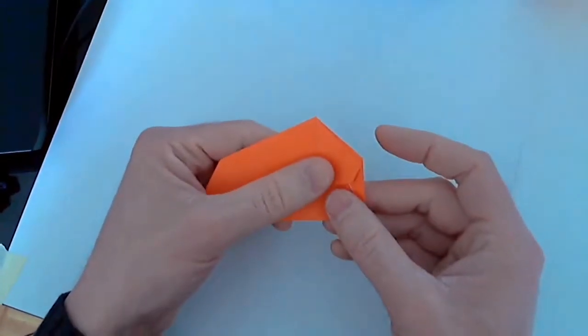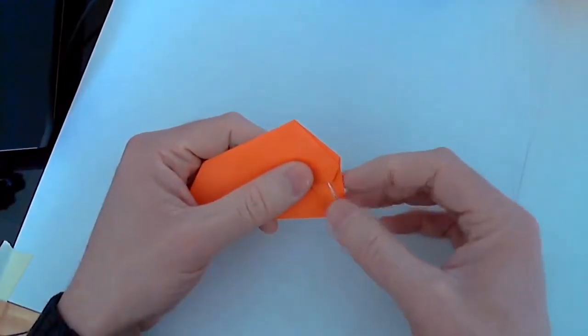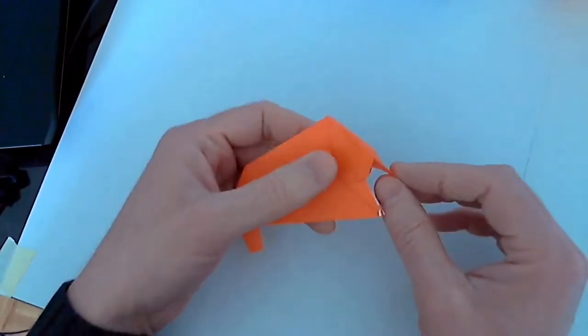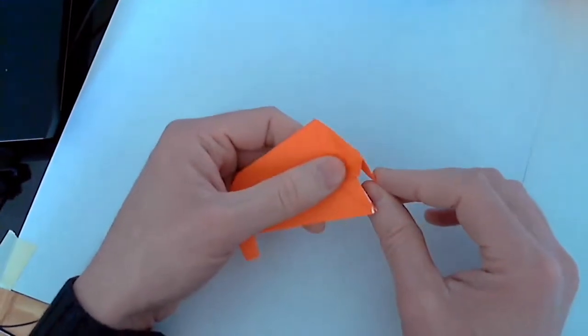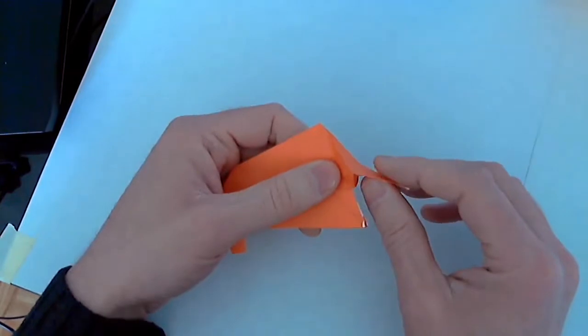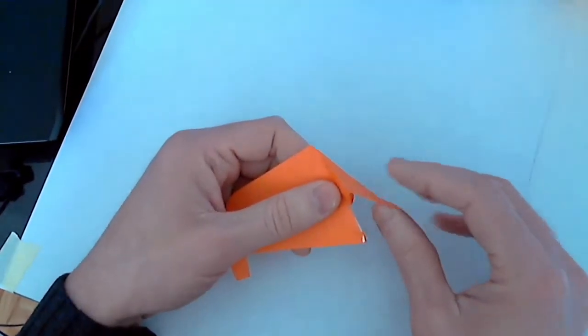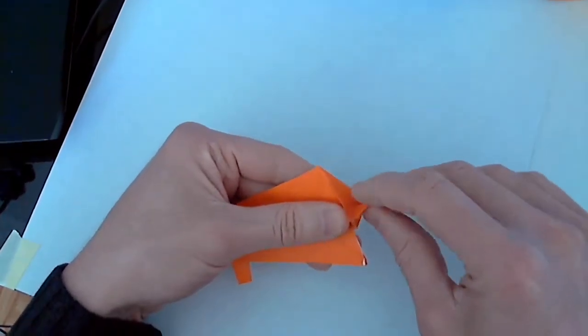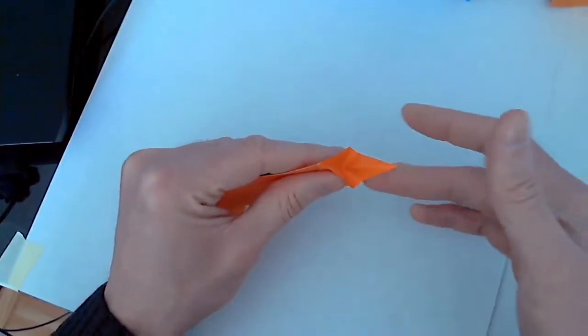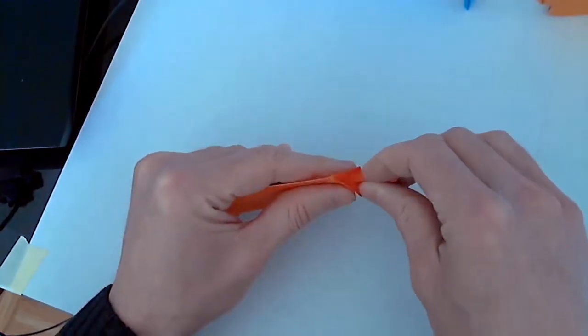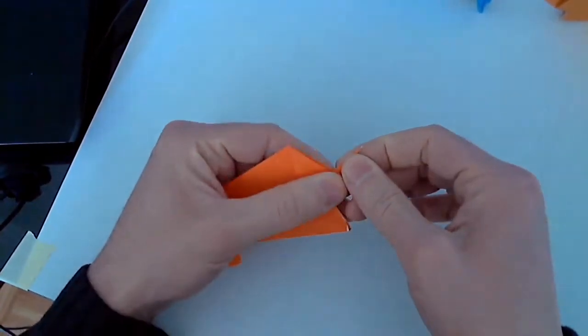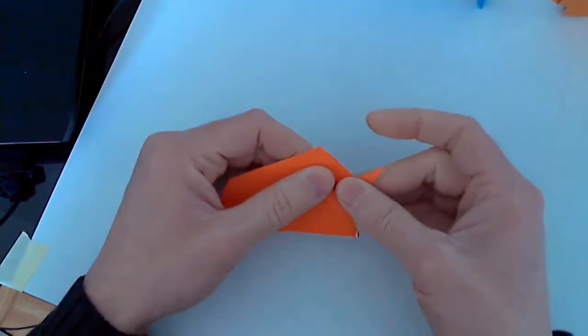Now we're going to make the trunk. Take this top flap and pull it up. As you pull it up, it's helpful to take your left hand and hold the model together because you don't want the ears to come apart. We're going to reverse this fold to make the trunk. I'm going to use my three fingers to reverse that fold and squish everything together, making the trunk.